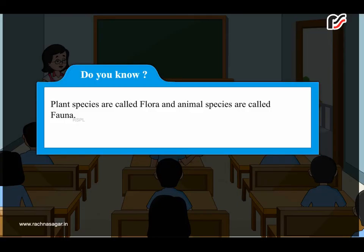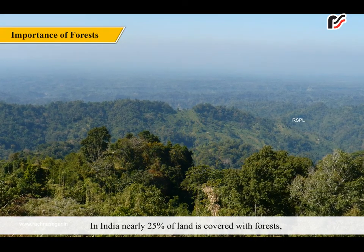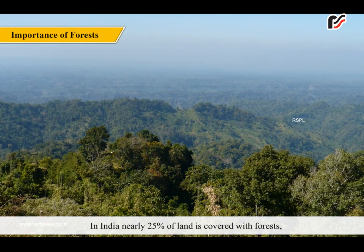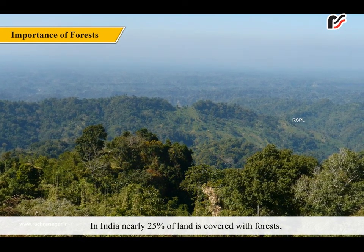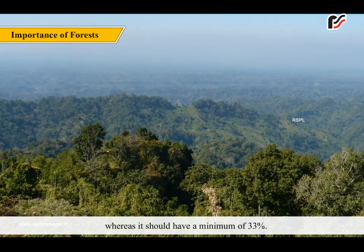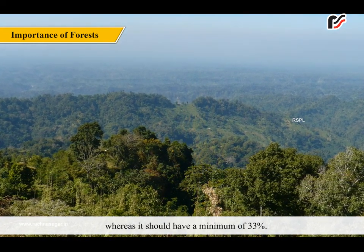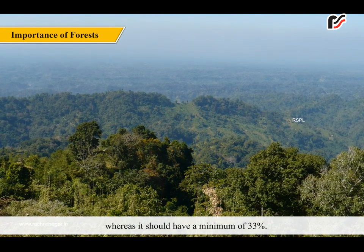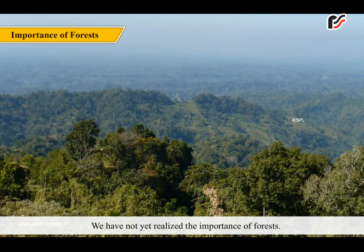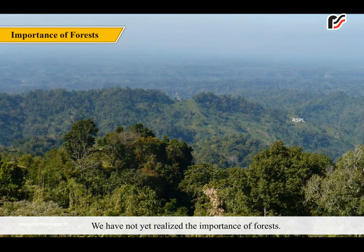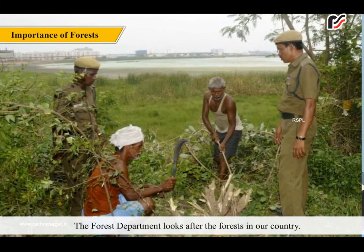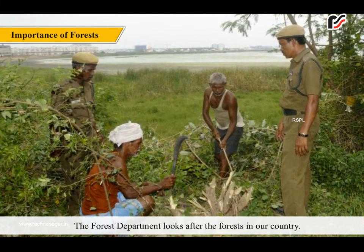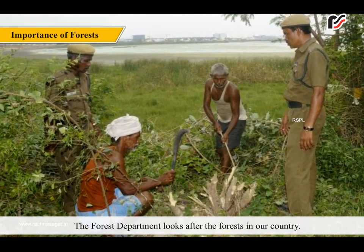Do you know? Plant species are called flora and animal species are called fauna. In India, nearly 25% of land is covered with forests, whereas it should have a minimum of 33%. We have not yet realized the importance of forests. The forest department looks after the forests in our country.